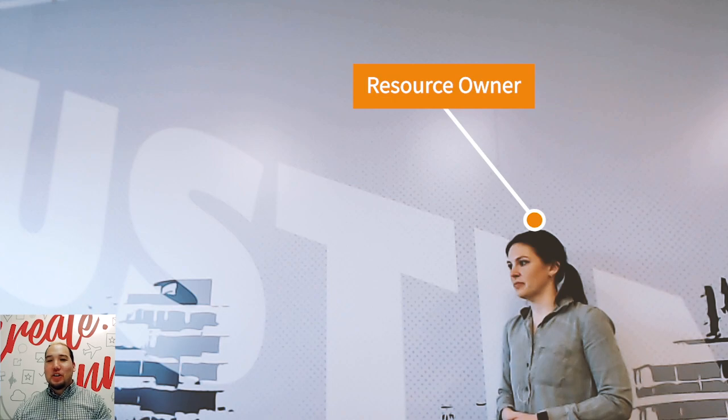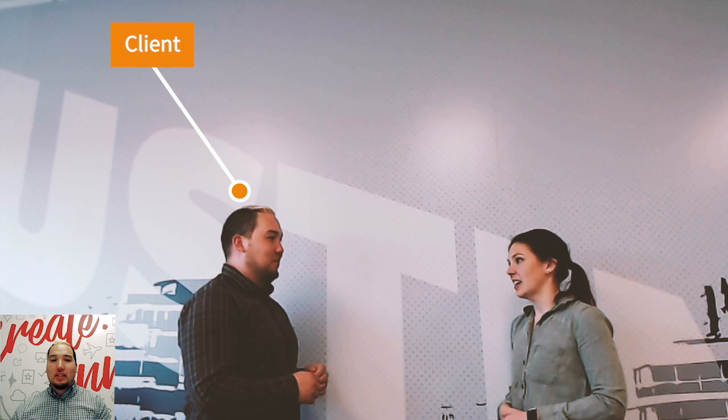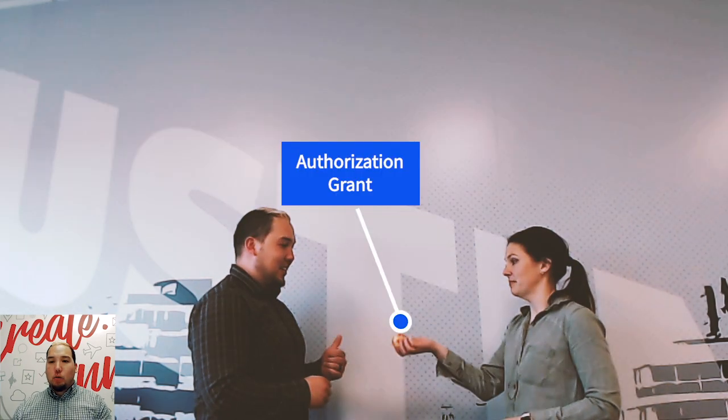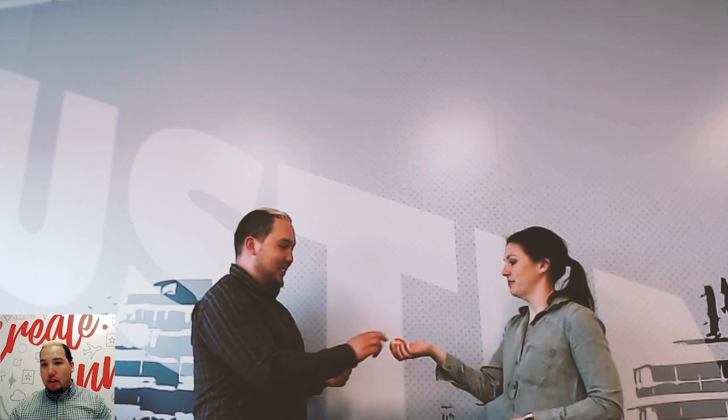Here we have the resource owner and the client. The client is going to ask for access to a protected resource owned by this resource owner. If the resource owner approves, then she will hand over an authorization grant, represented here by an apple.